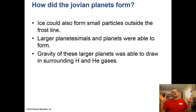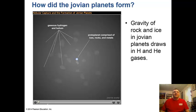How did the jovian planets form? Ice could also form from small particles outside the frost line, too far away from the Sun to melt. Larger planetesimals and planets were able to form. The gravity of these larger planets was able to draw in the surrounding hydrogen and helium gases - the primordial gases that formed the solar system and the universe.